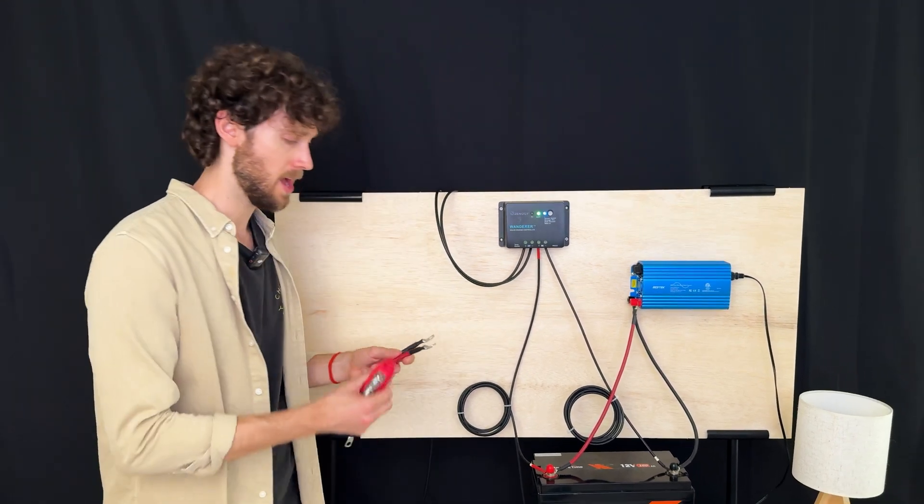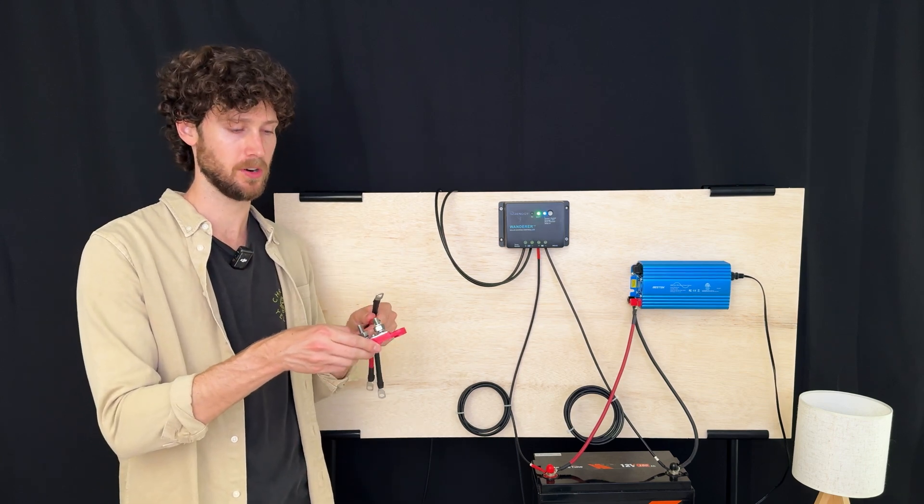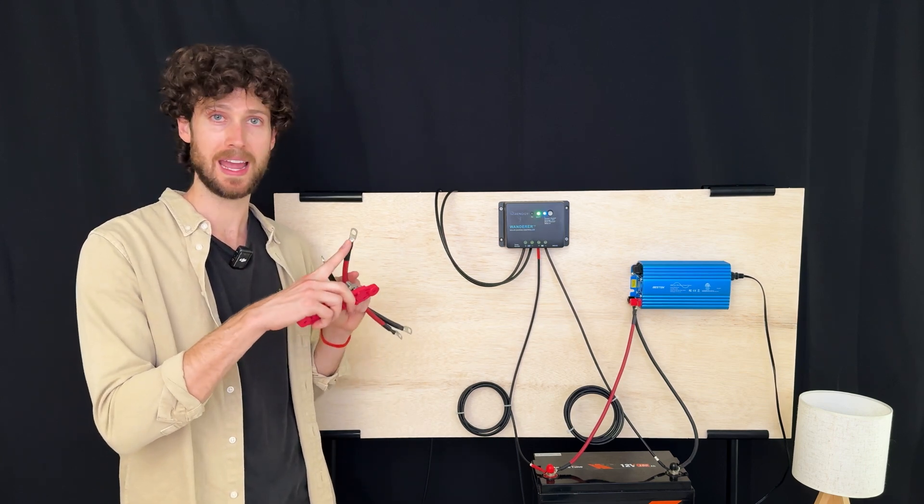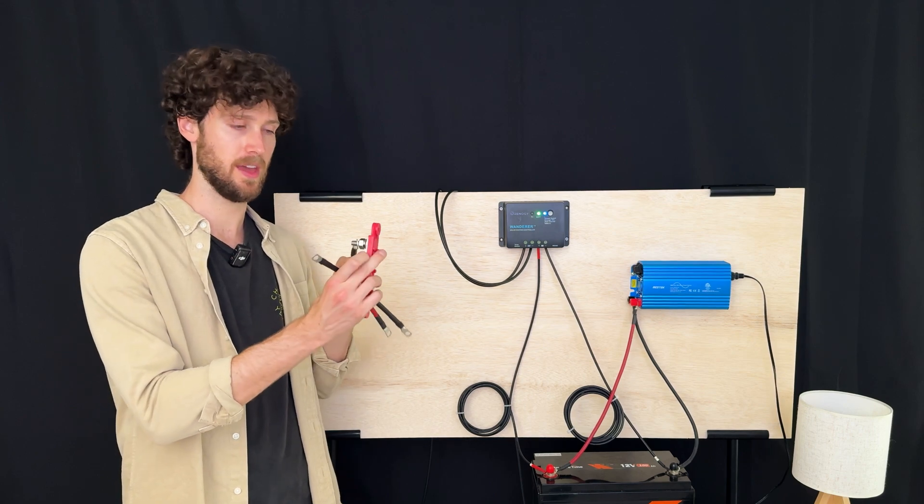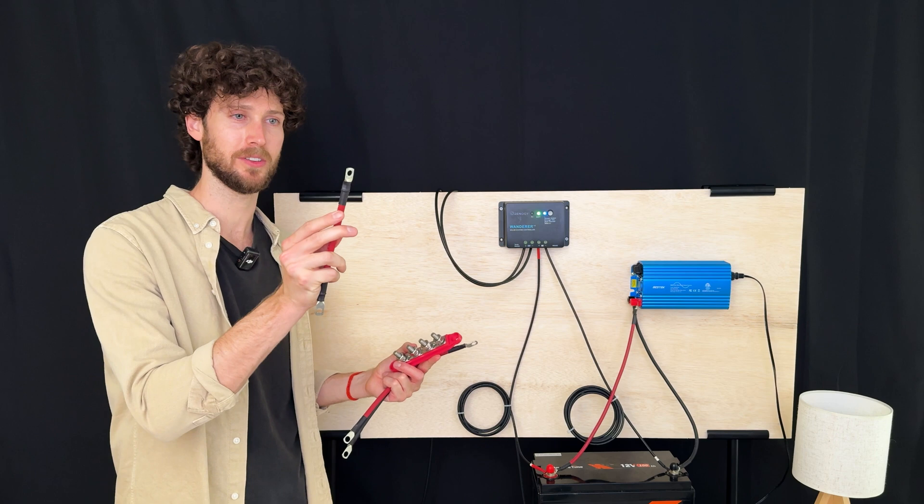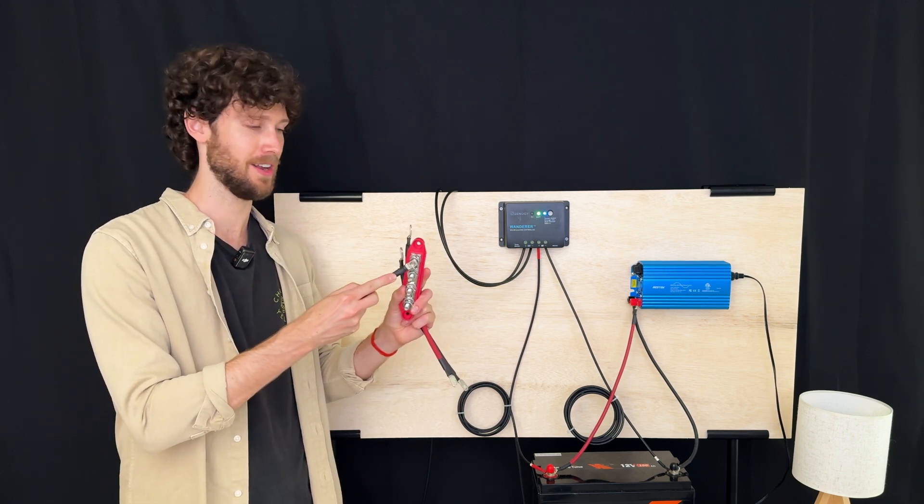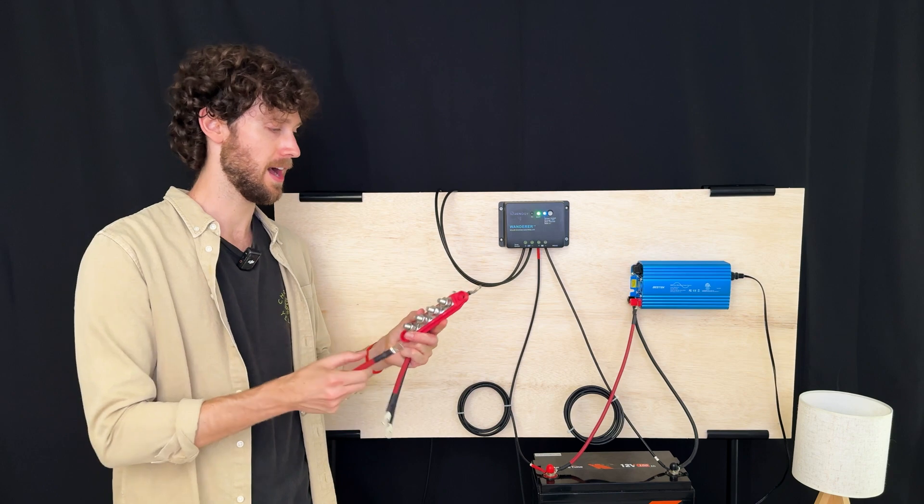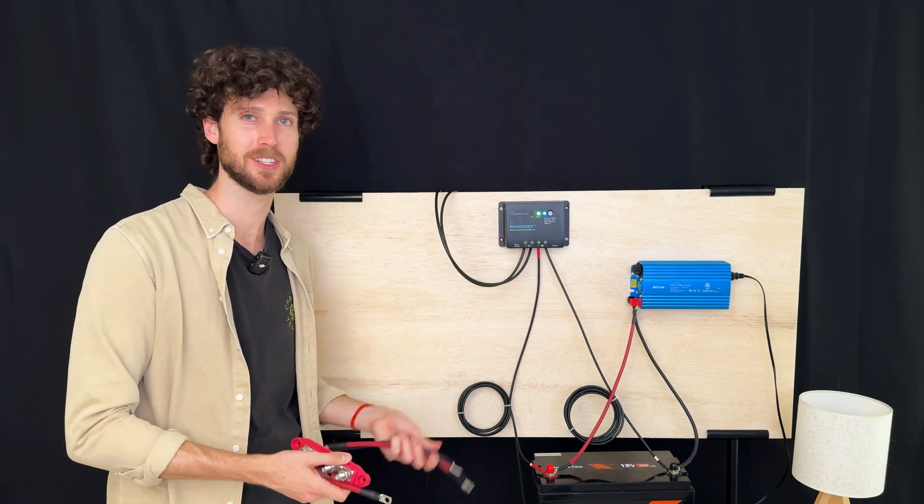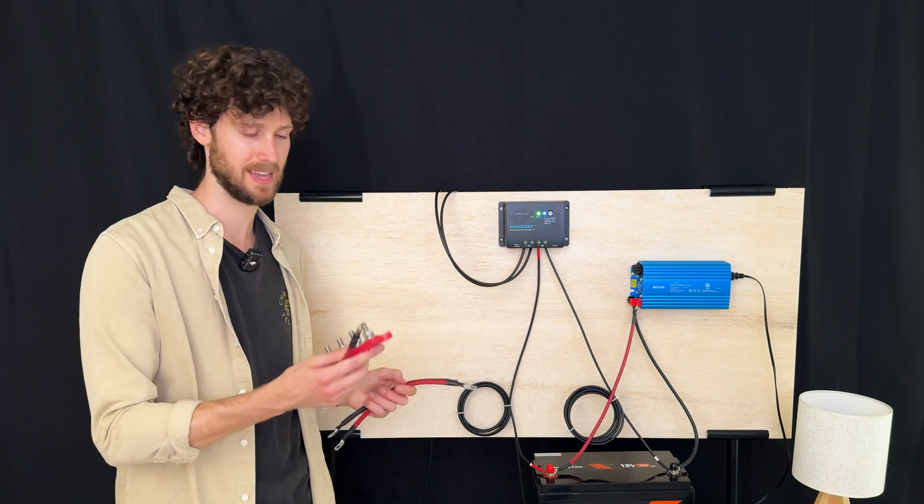This is important: get the right ring connector size to fit onto your bus bars. So this is a three-eighths inch ring connector, and it fits on there. But if I go just one-sixteenth inch smaller, this is a five-sixteenth inch ring connector, it doesn't fit on there. So I almost always buy the three-eighths inch just because I know that they will fit on most of these bolts that a lot of these devices have.